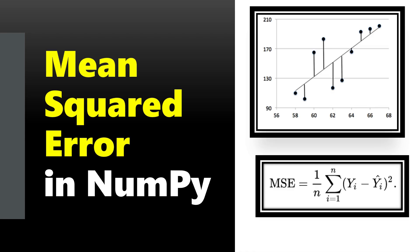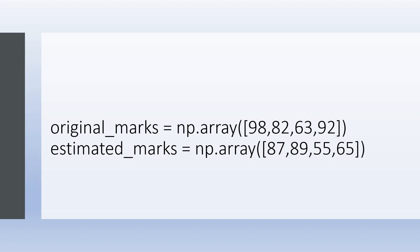Today we are going to discuss how to calculate mean squared error using NumPy in Python. We are going to calculate the mean squared error for two arrays: the first array is original marks and the second array is estimated marks.